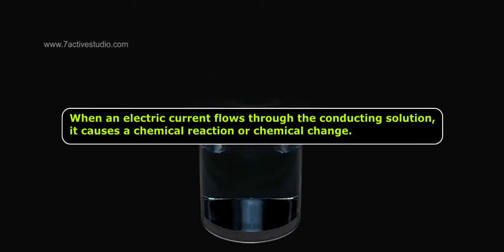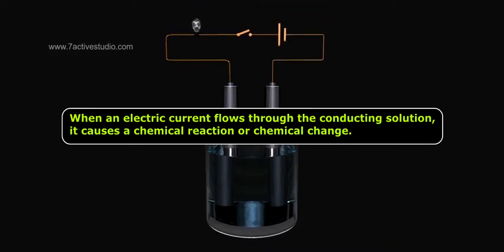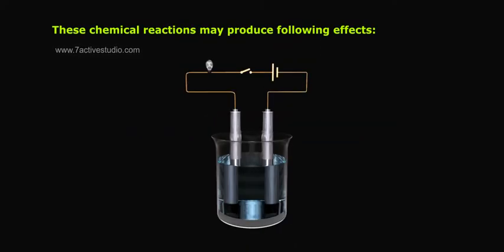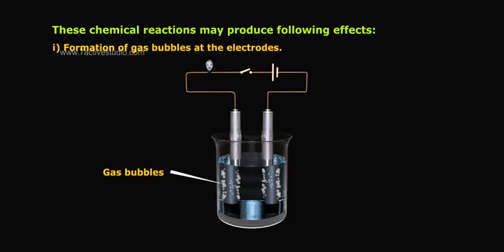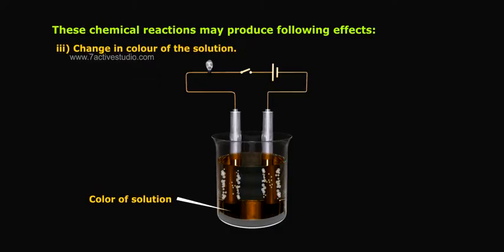Chemical effects on electric current: when an electric current flows through a conducting solution, it causes a chemical reaction or chemical change. This is called the chemical effect of electric current. These chemical reactions may produce the following effects: (1) formation of gas bubbles at the electrodes, (2) deposit of metal on the electrodes, (3) change in color of the solution.